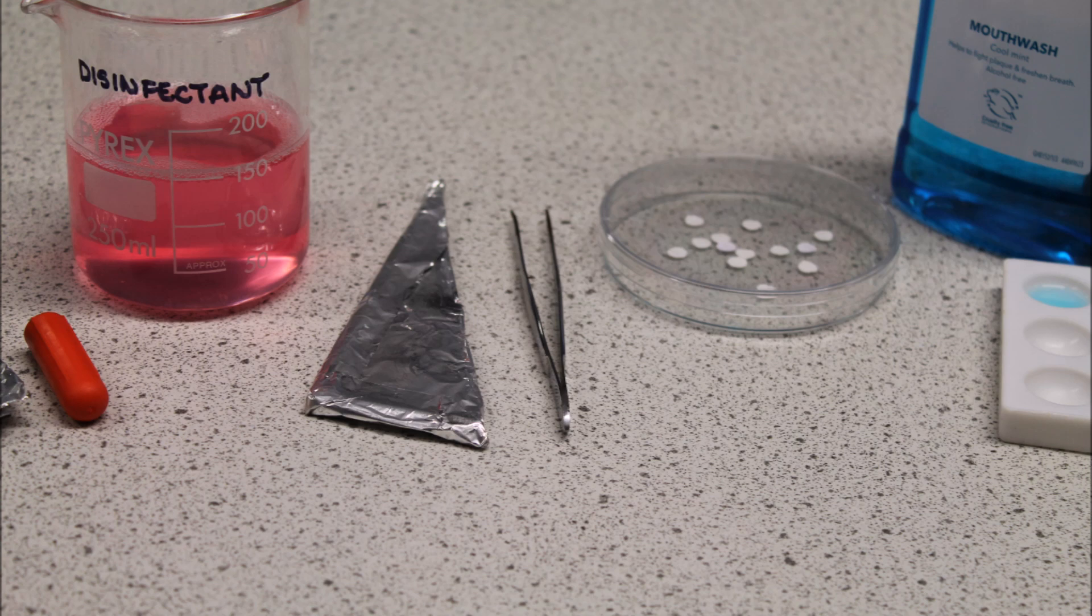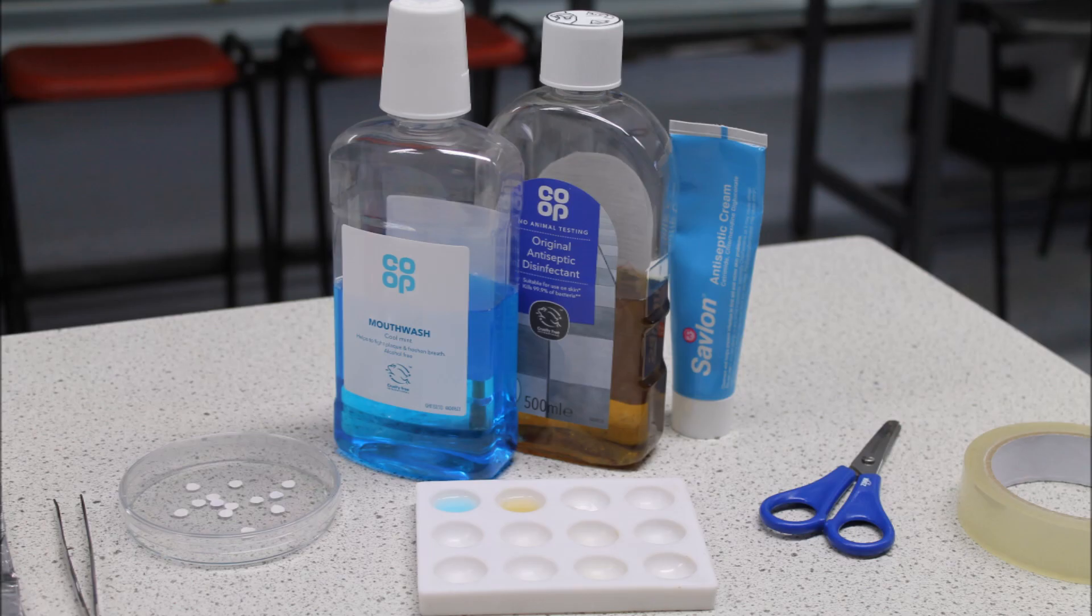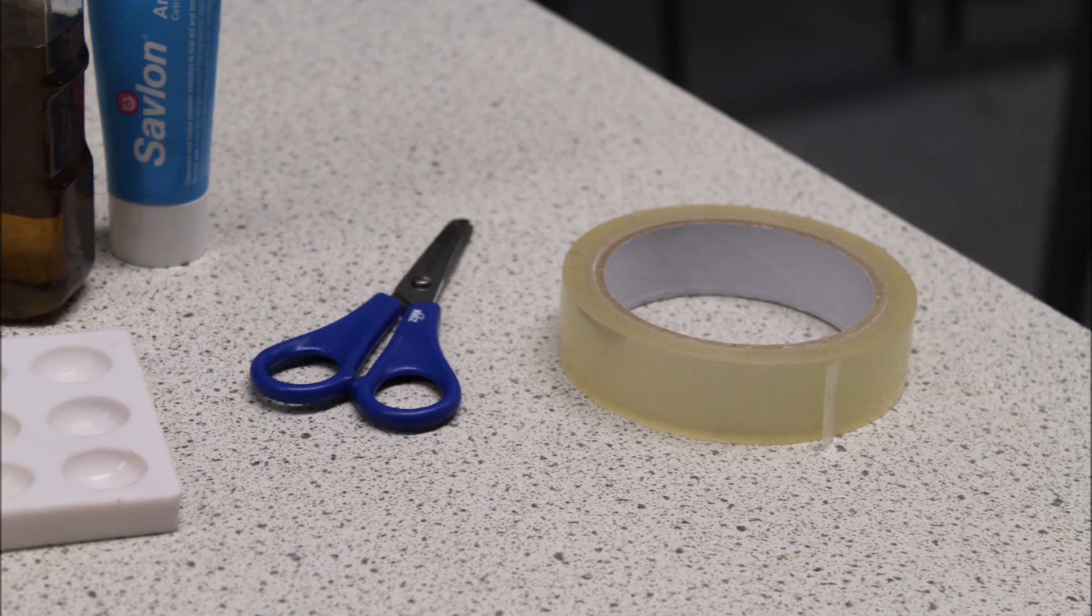A metal forceps. They must be made of metal so they can be held in a Bunsen flame and sterilised. Some small paper discs, three different antiseptics to investigate. Here we have antiseptic mouthwash, liquid and cream. And finally, sellotape and scissors.